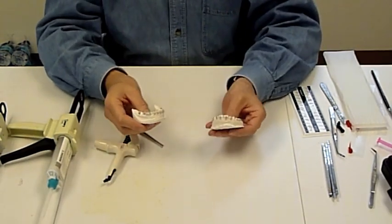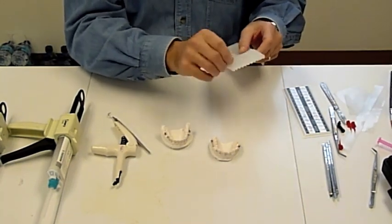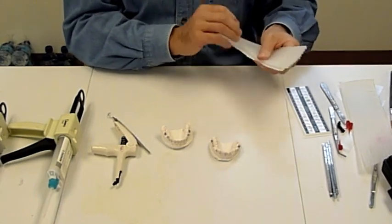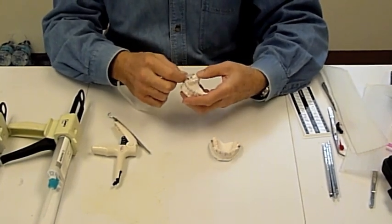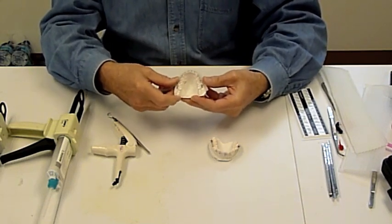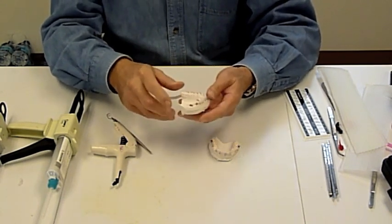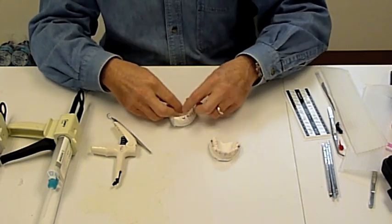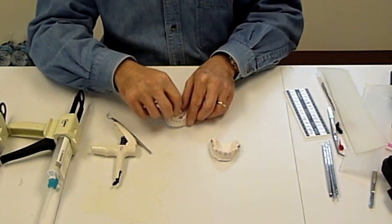Now we have our models with our brackets placed and cured. It's time to use boxing wax, white wax, to create a wax seal around our models. You place the wax so that it is just below the brackets, and we place it on the lingual or palatal side in order to create a stop, a positive stop on the occlusal surface.